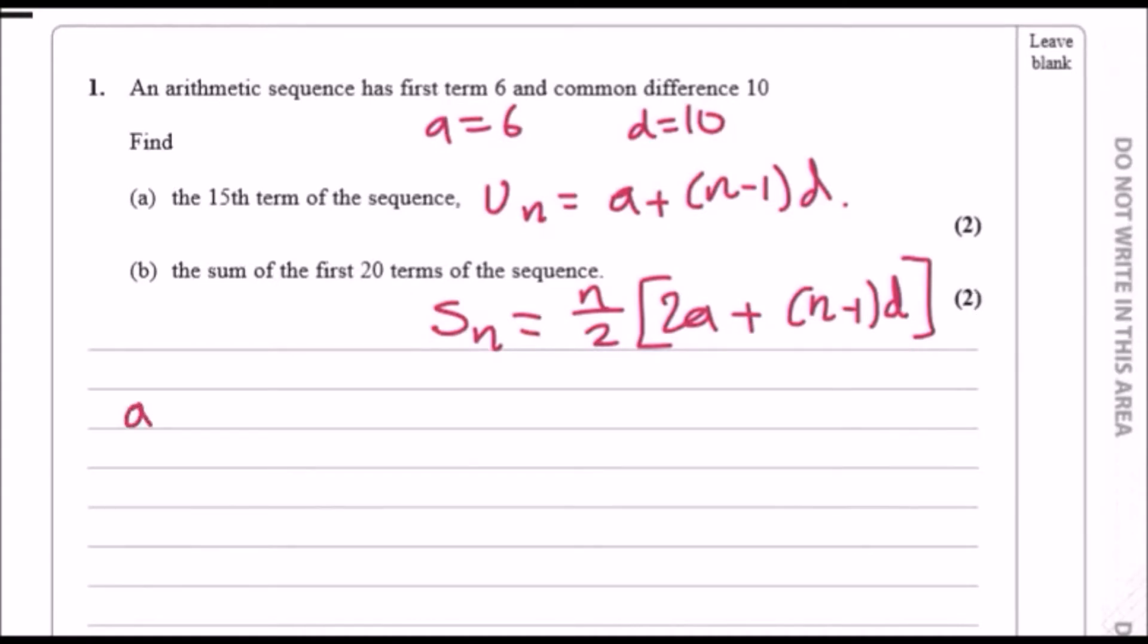For part a, the 15th term is U15, so we're going to have 6 plus 15 minus 1, which is 14, times d which is 10. Smash in the calculator where you should get about 146.